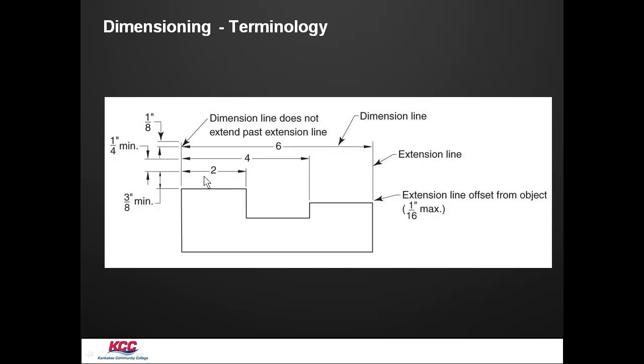At a minimum, we should have at least three-eighths of an inch on our drawing, when it's printed out, between the object and our first dimension line. We don't want to crowd the object and smash it right up against the object. We want at least three-eighths of an inch minimum. After that, each dimension, between each dimension line, we want at least a quarter-inch minimum. We like to keep them orderly and looking the same. These are some of the basic rules of our dimensioning terminology.